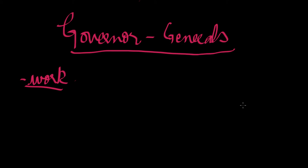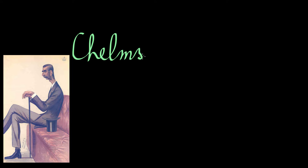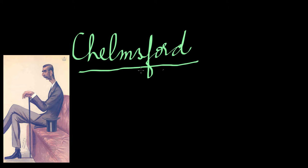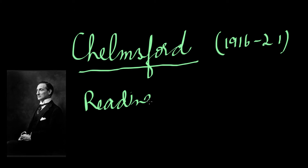From this lecture onwards we will move to further Governor Generals. The first Governor General I am going to discuss is Lord Chelmsford — C-H-E-L-M-S-F-O-R-D. Do not make the mistake of writing the wrong spelling because a lot of people either pronounce it wrong or write the wrong spelling. Lord Chelmsford was there from 1916 to 1921.